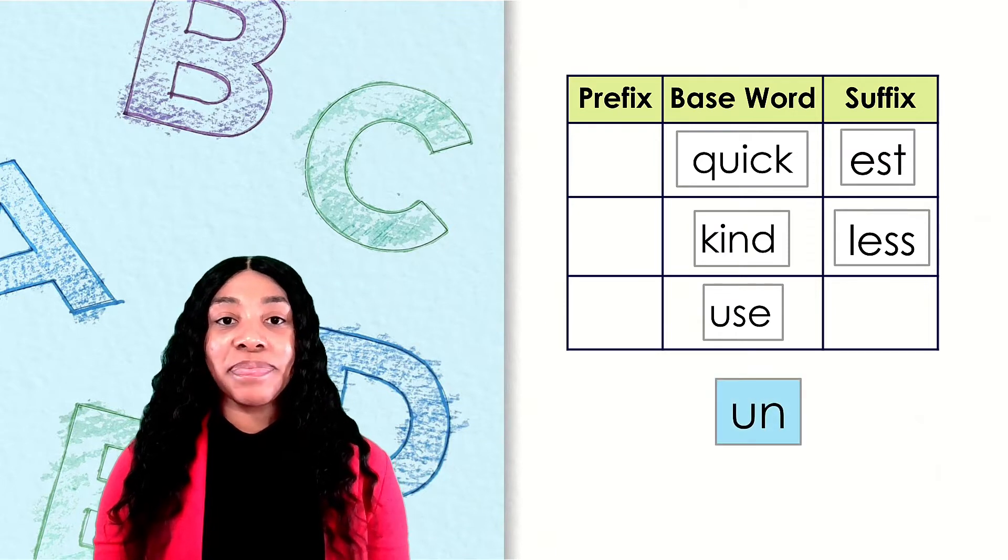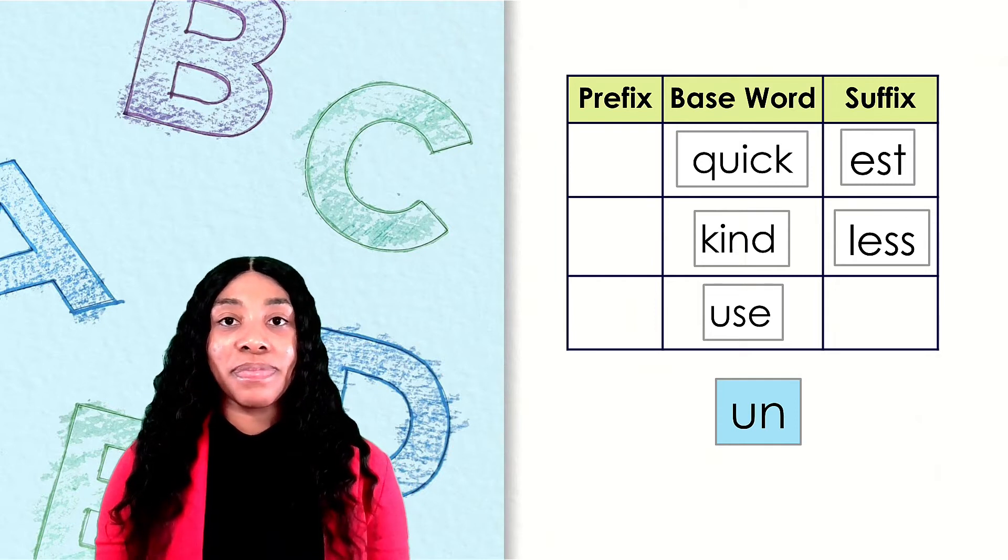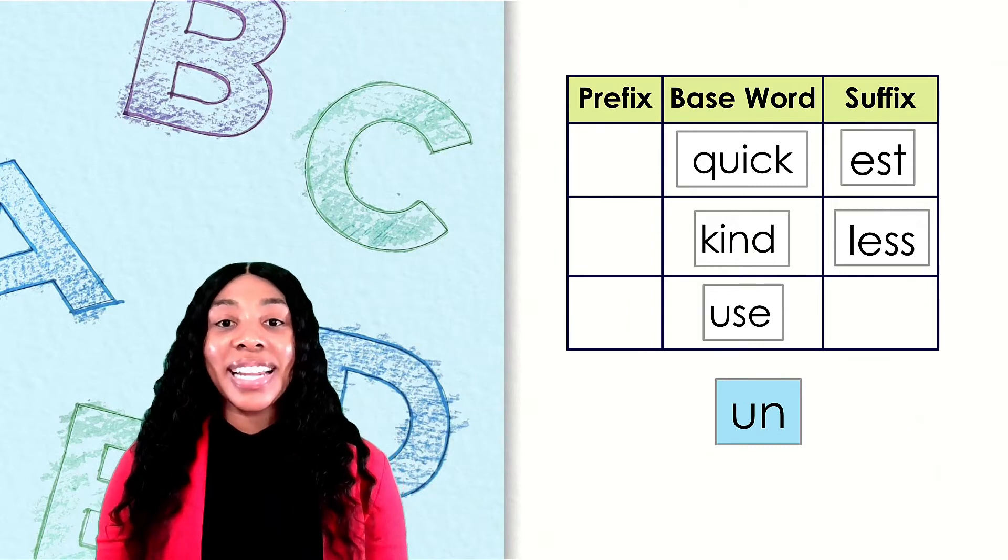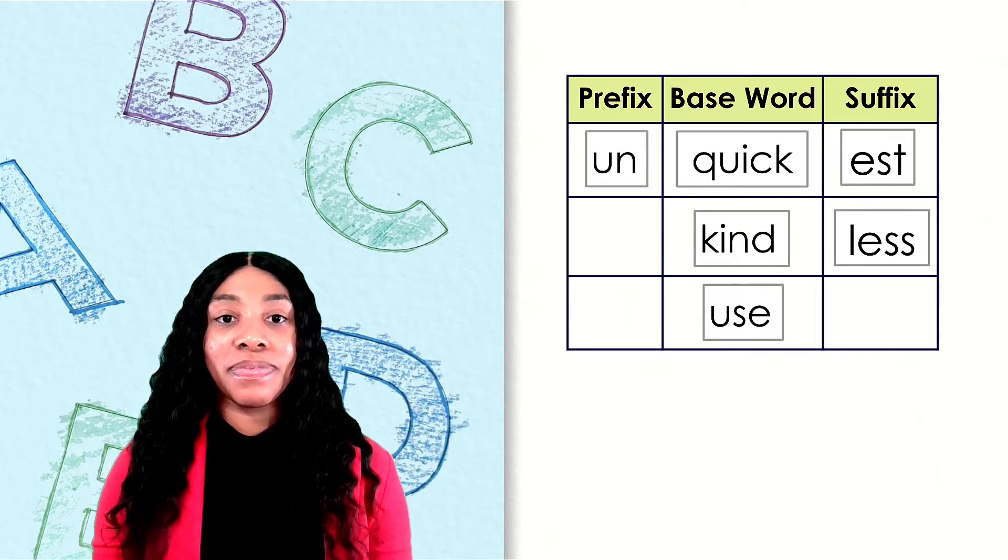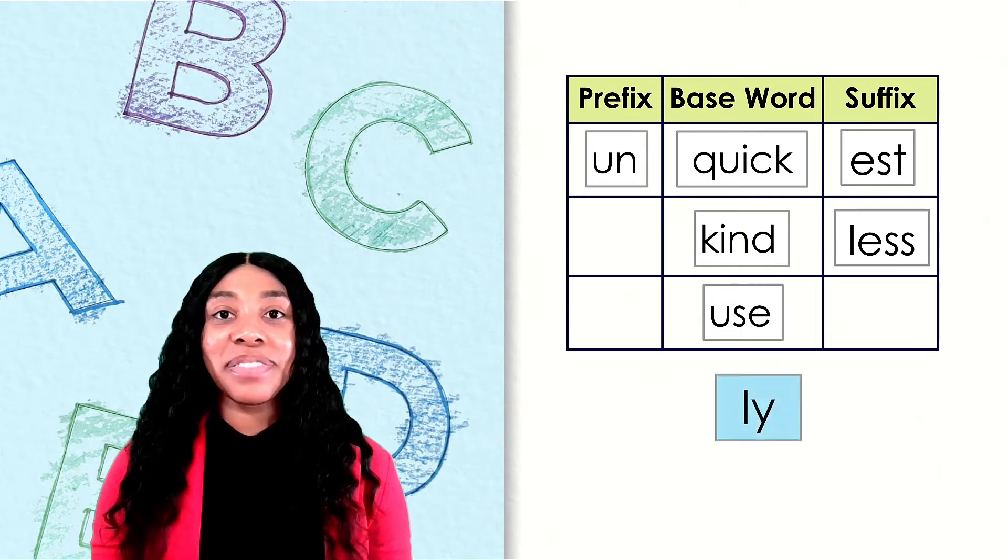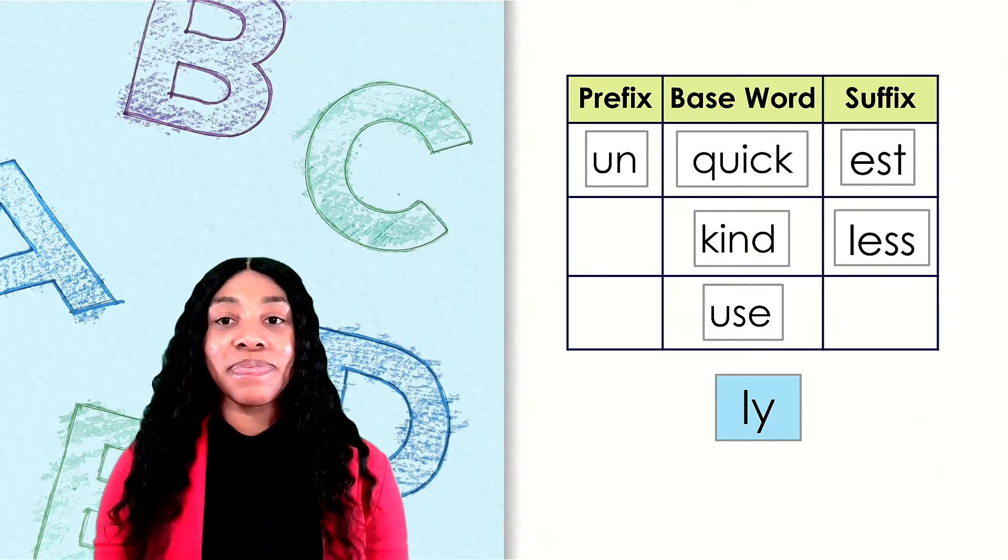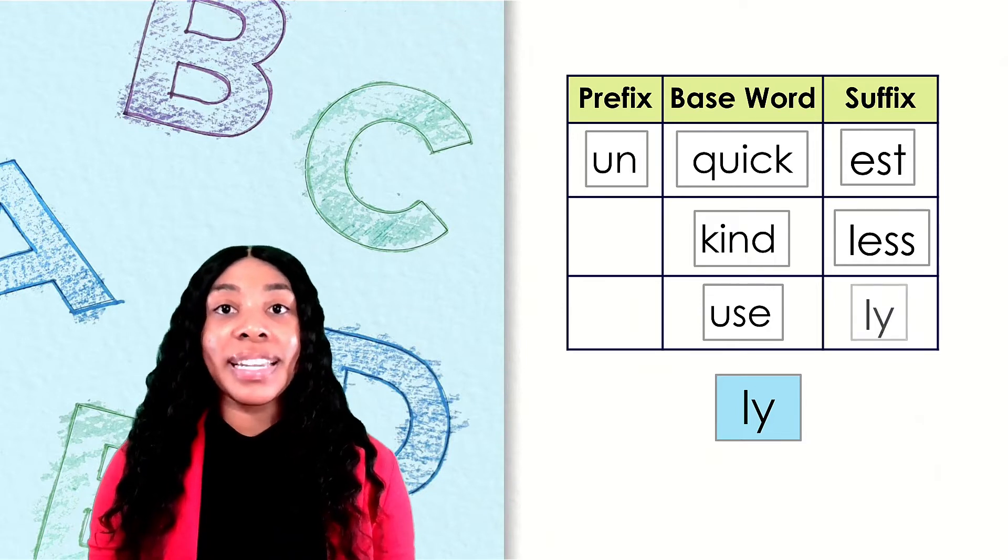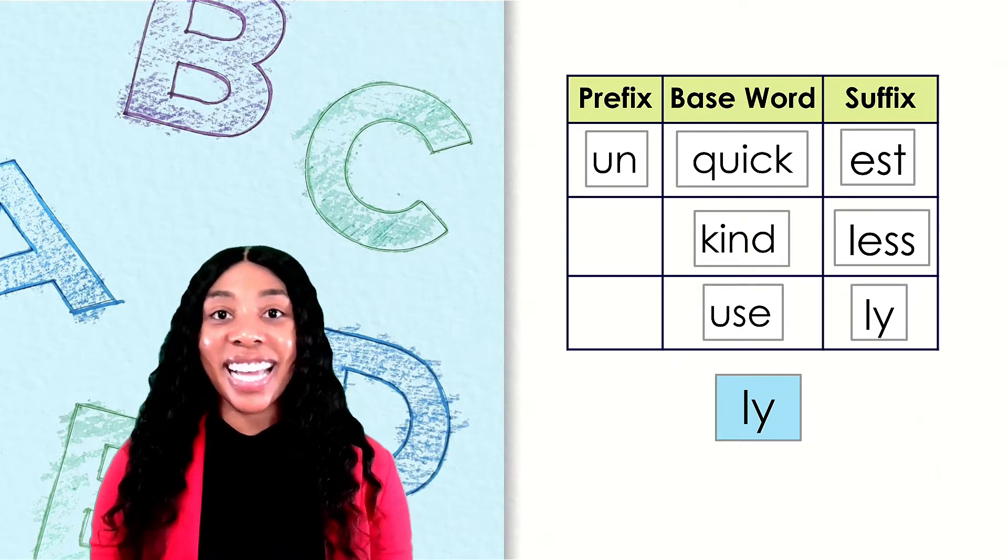Here's our next word. Un. Is un a base word or affix? Un is a prefix. We can add it to a base word to mean not or the opposite of. Here's our next word. Ly. Is ly a base word or affix? Ly is a suffix. We can add it to a base word to mean like. Go ahead and give yourself a celebration for finishing this section.